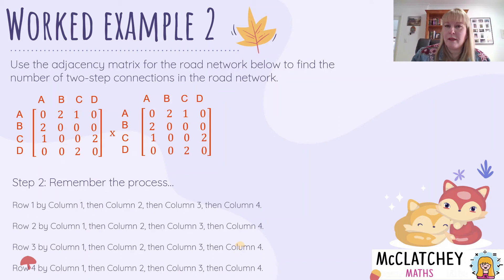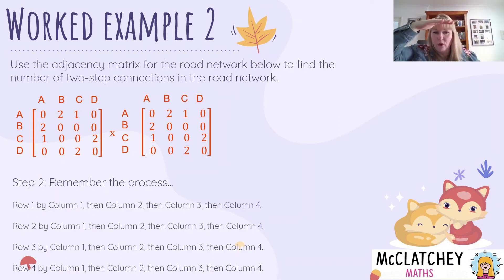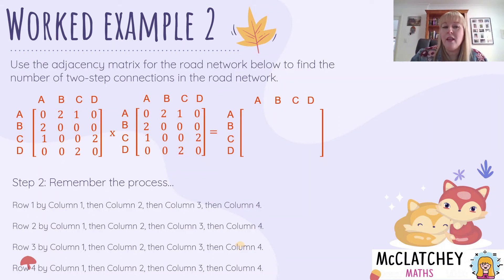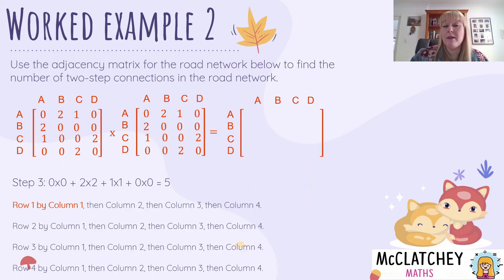So I have to remember my process. I'm going to take row one, run across it, dive down column one, then column two, then column three, then column four. Then come down row two back to columns one through four, then row three, then row four. I'll end up with 16 numbers for my final matrix, which is the matrix squared. So let's kick it off. Starting with row one times column one: I take the first element — zero — and multiply that by zero, giving me zero. I add that to two multiplied by two, which gives me four. Then one by one gives me one, and then zero by zero. So my result is four plus one, which gives me five.